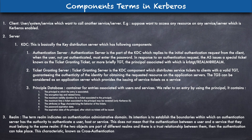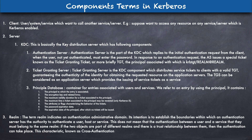The components of Kerberos: first, the Client — basically you, or any system trying to access resources. A client can be a user, a service, or a server — anything trying to access resources at some other location. Then we have the KDC Server — the Key Distribution Center — which holds three components: the Authentication Server, which authenticates requests; the Ticket Granting Server, which assigns tickets after authentication; and a Database.